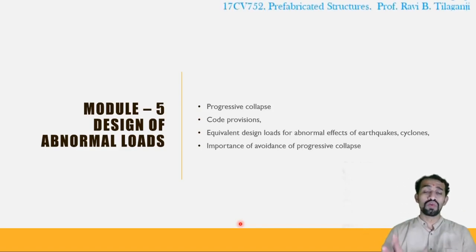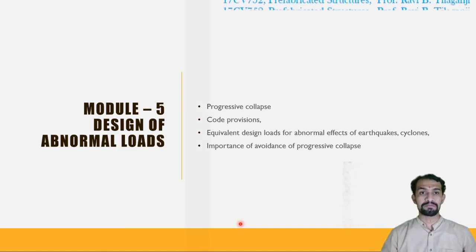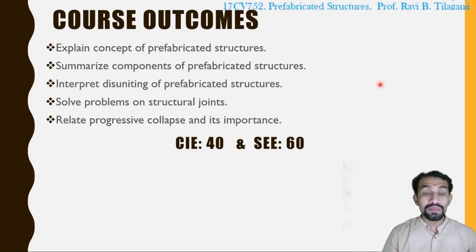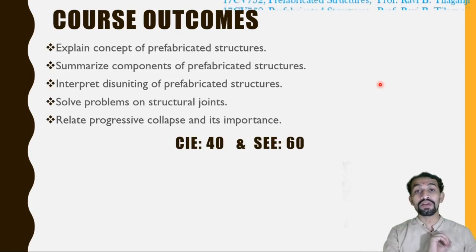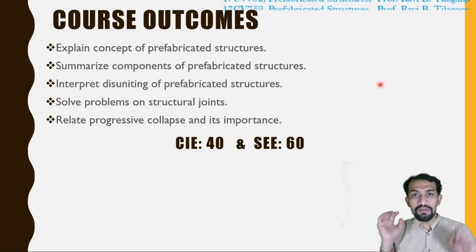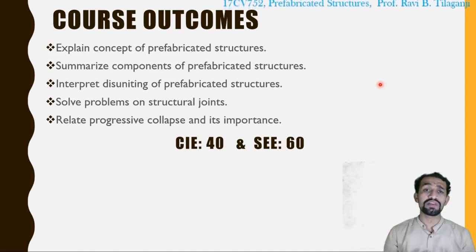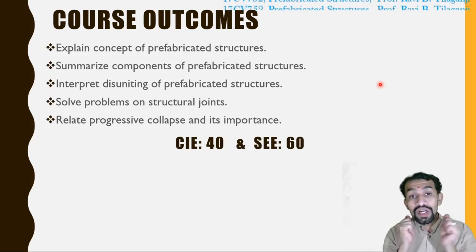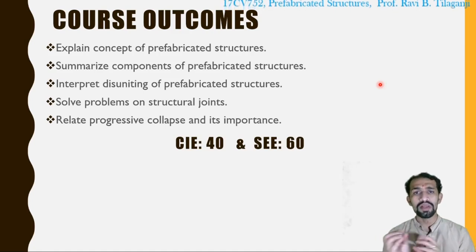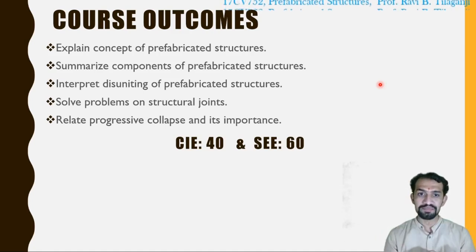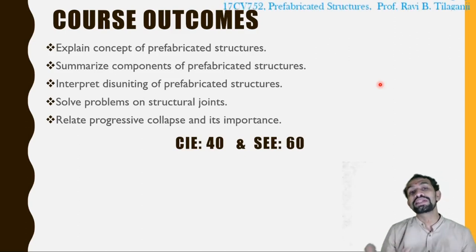After all the five modules, what we are able to find? What this particular subject is going to give us? Here are the outcomes after the particular subject. Explaining the concept of prefabricated subject structure. We will summarize some components of prefabricated structure such that we can use them in the future. We are able to interpret a disuniting of prefabricated structures. Solve some problems related to construction or structural joints. Some relative, progressive collapse and its importance.